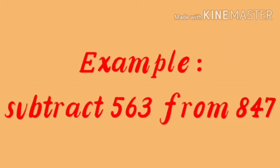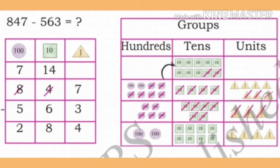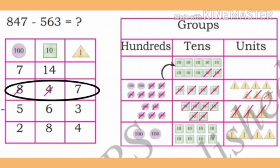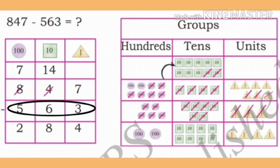Observe the next example, children. Subtract 563 from 847. This sum is also represented pictorially as shown, further observe. Children, write the place value table. Write first the Minuend, 847, then write the Subtrahend, 563. Let us find the difference.